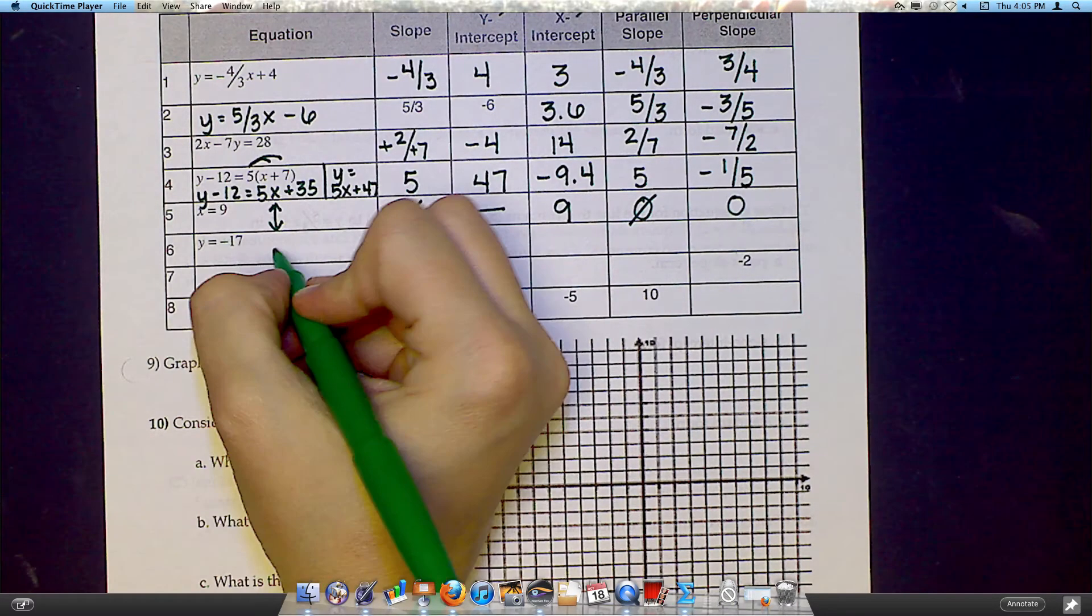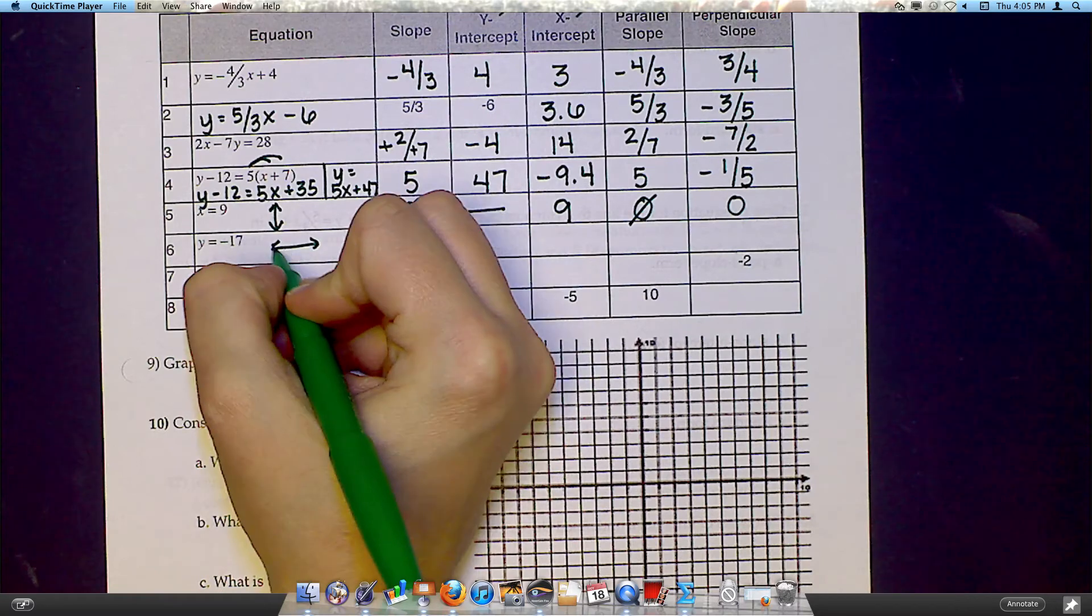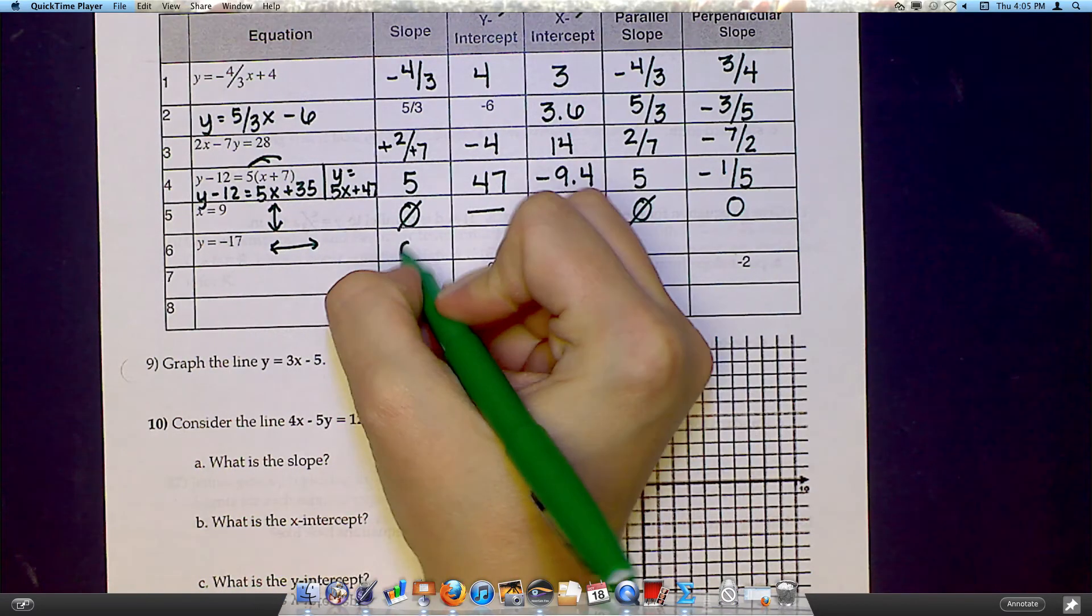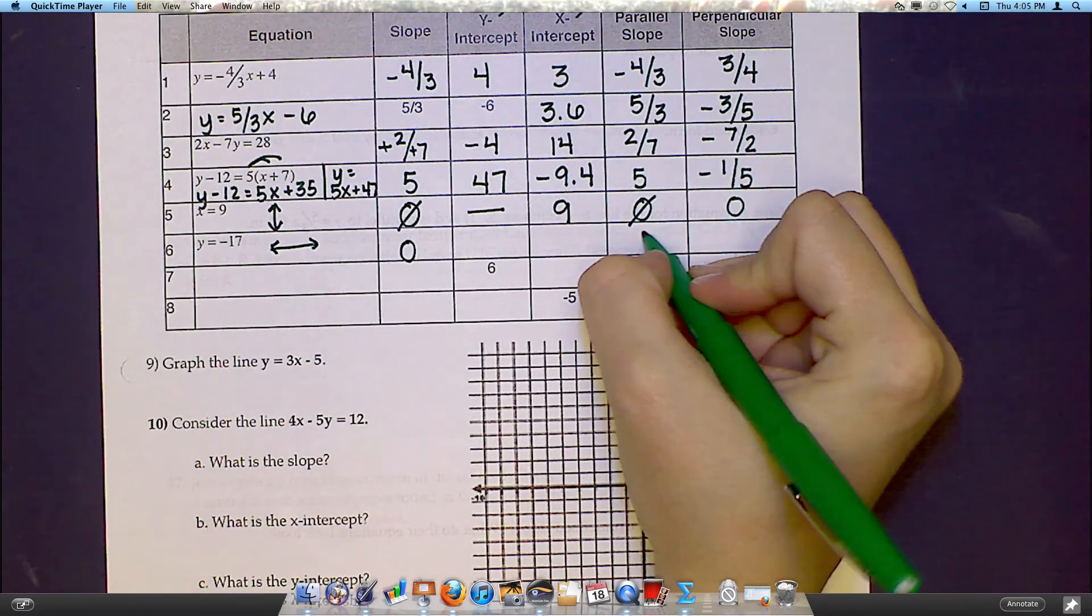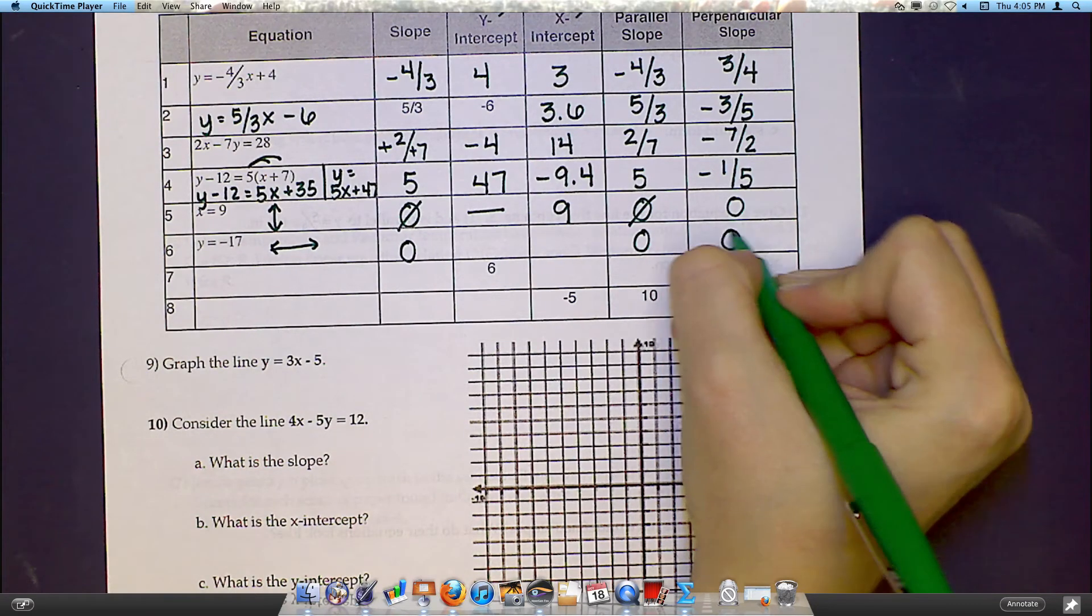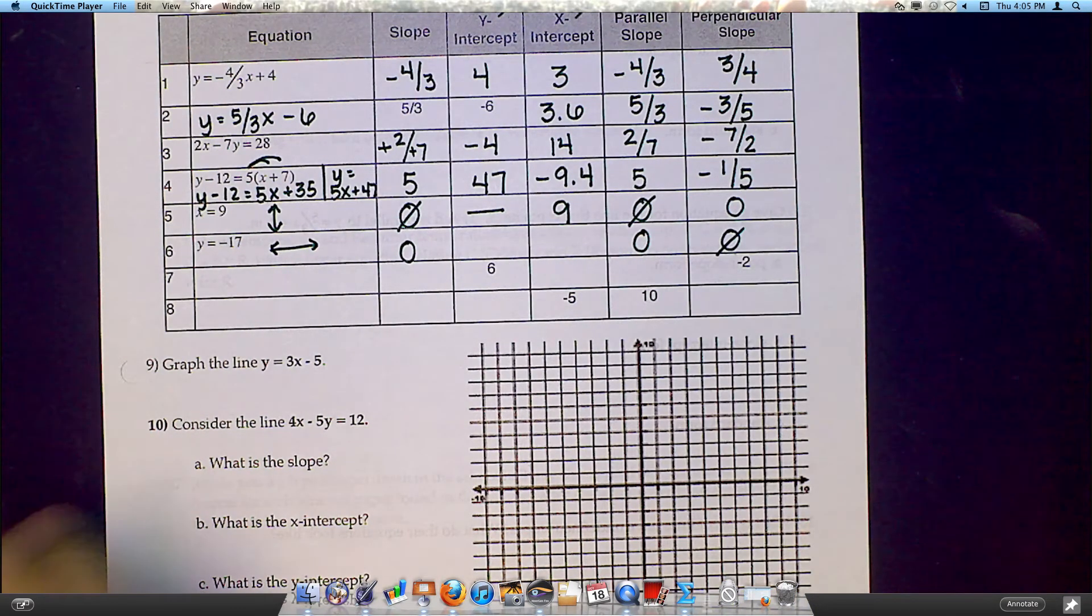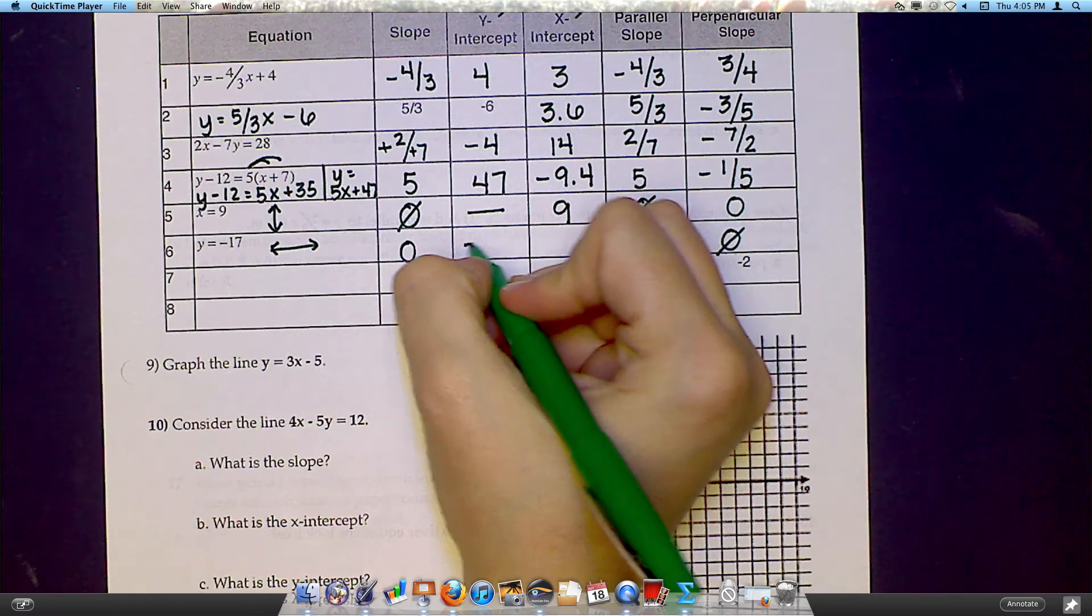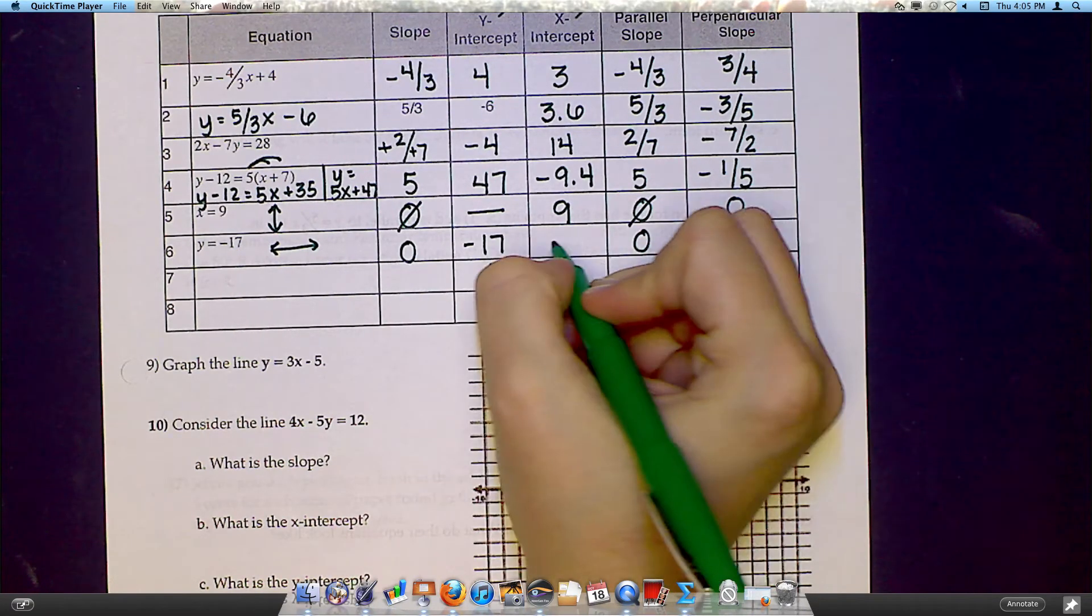This one, y equals negative 17, is going to be a horizontal line, which means the slope is 0. And the perpendicular slope then would be undefined. This means that my y-intercept is negative 17, and my x-intercept is none.